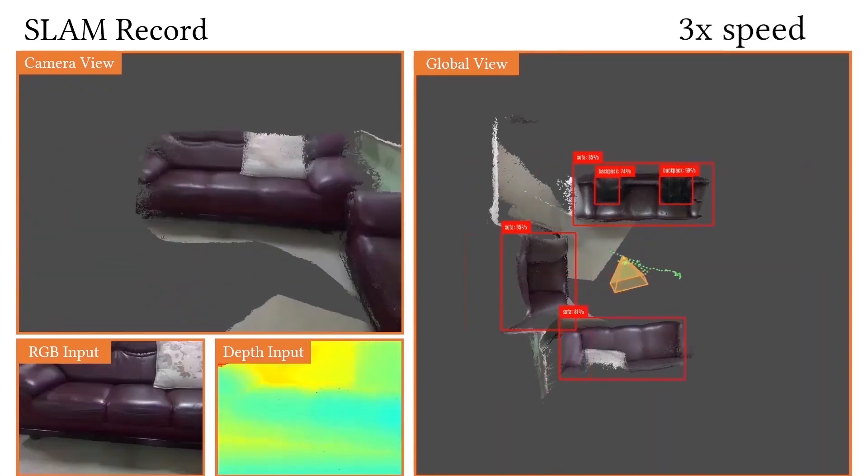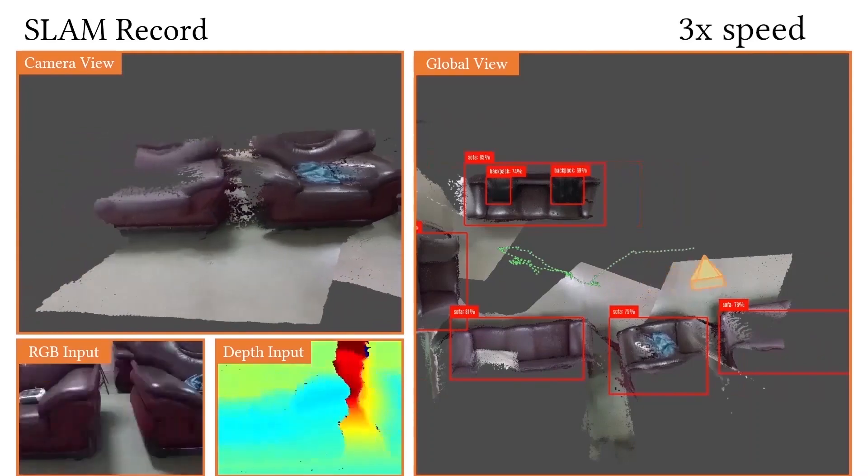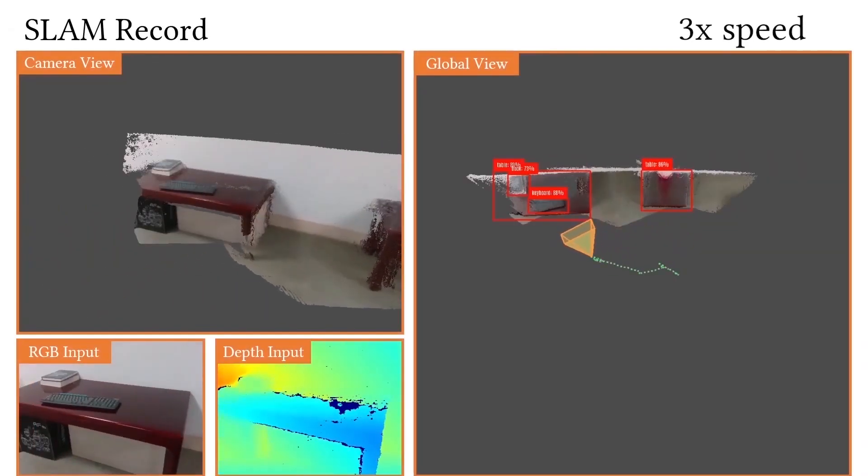The recognition results are marked with red boxes in the global view window. The entire scanning process is divided into three stages for hardware limitations.